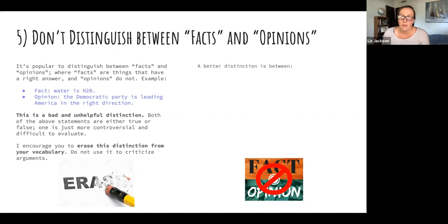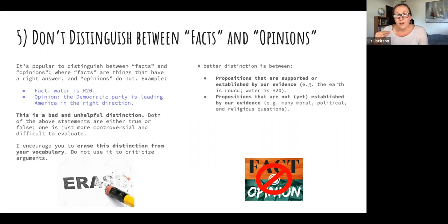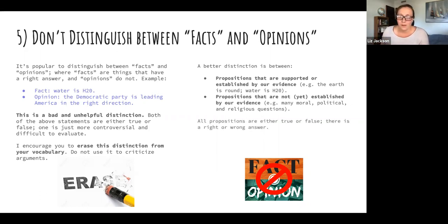A better distinction is between propositions that are clearly supported or established by our evidence — for example, we have very good reason to believe the earth is round and that water is H₂O — versus propositions not yet established by our evidence, where the evidence is complicated, there's no clear consensus, and the matter hasn't been settled. For many moral, political, and religious questions, our evidence is just hard to evaluate and has not fully established the matter yet.